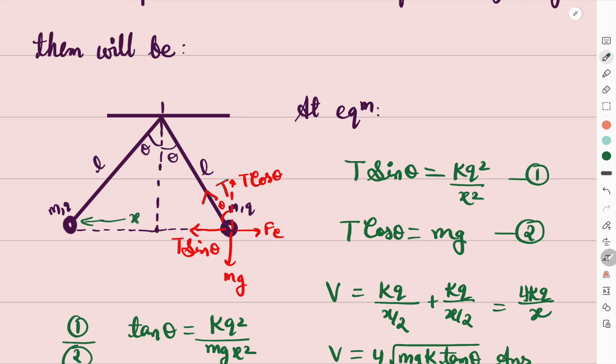In dono ke beech ki jo distance hai wo x hai aur dono particles ek repulsion ki wajah se pass mein hongi. Yadi balls q charge up the hain to repulsion ki wajah se ek dusre se kaafi door chali jaein. Aur yahan question mein given hai ki theta angle pe ja ke dono align ho gayi hain.